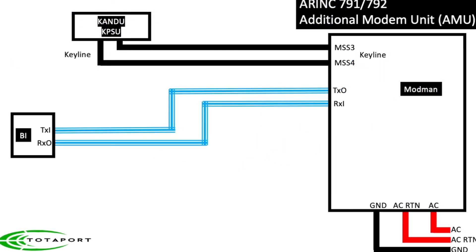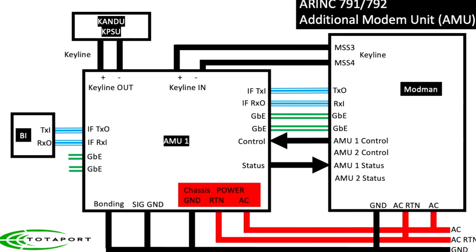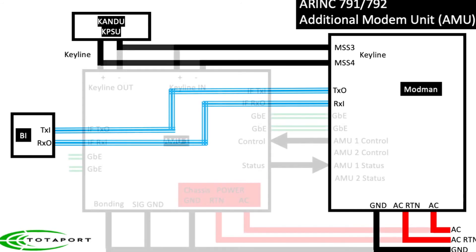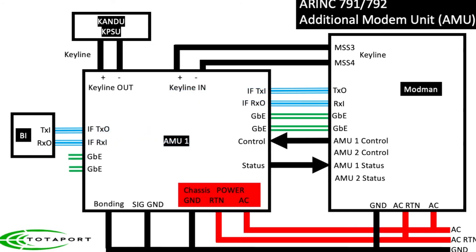Every one of those beams needs a modem. The MODMAN can support one or two modems or beams. An additional modem unit, or AMU, can support another two modems, and two AMUs can provide support for four modems or beams. The AMU inserts itself in front of the modem without changing the interface — a really clever method.